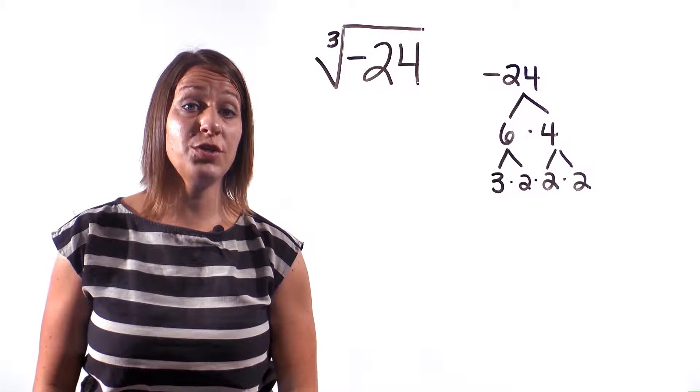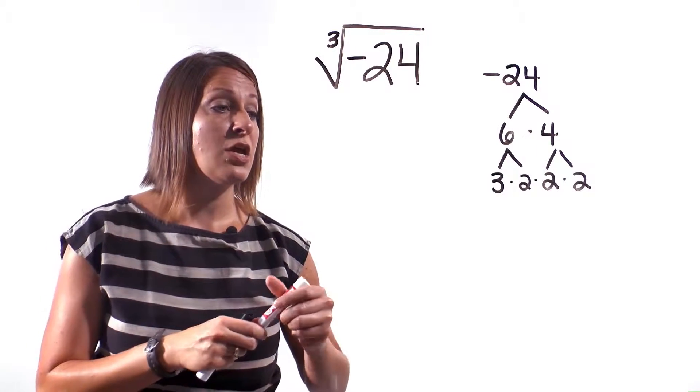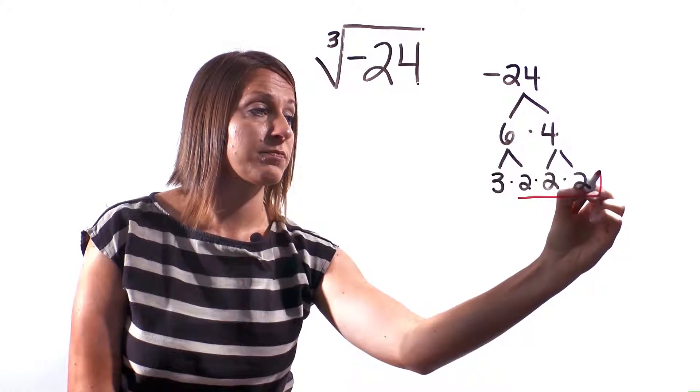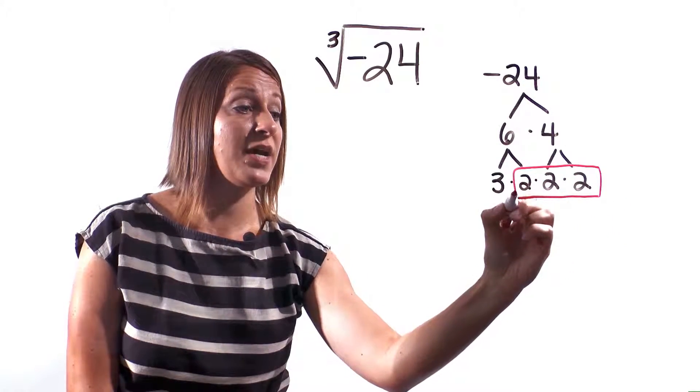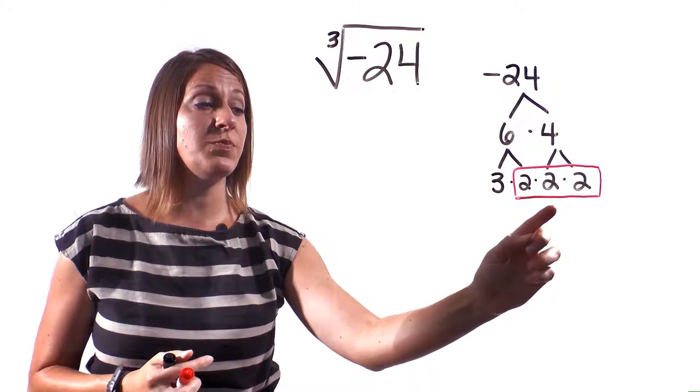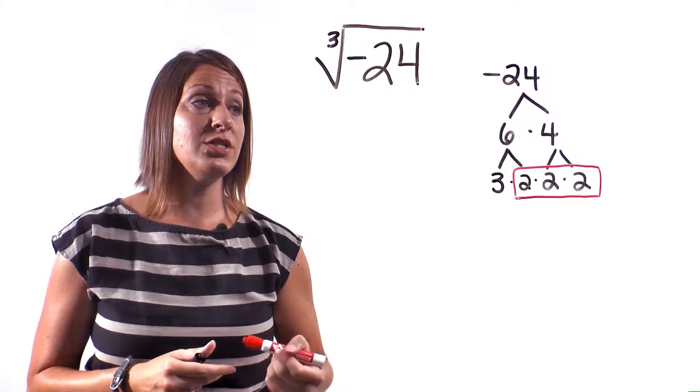Because this is a cubed root, we're looking for groups of 3 on our bottom line. Notice that we have three 2s. In other words, we have a set of triplet 2s.